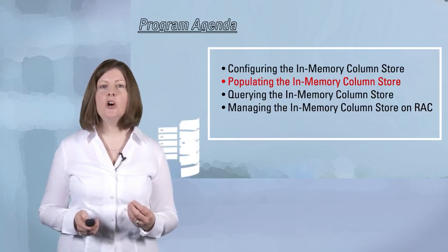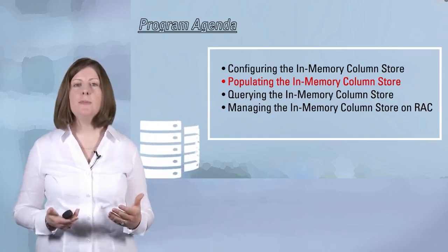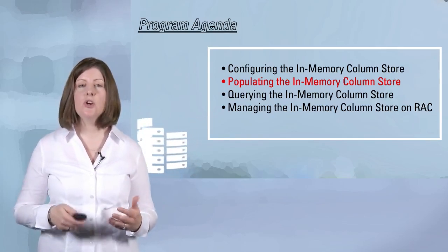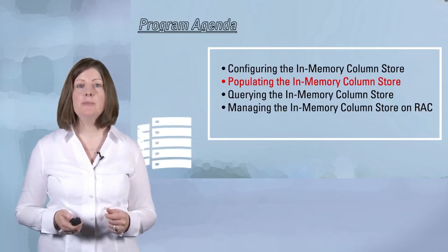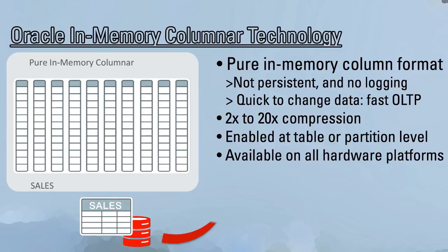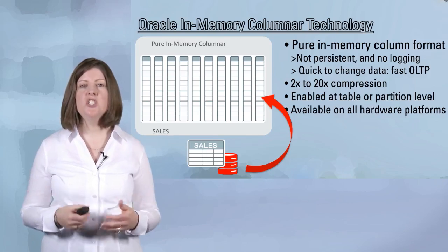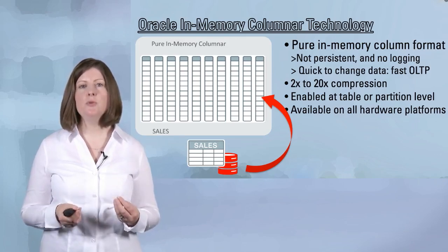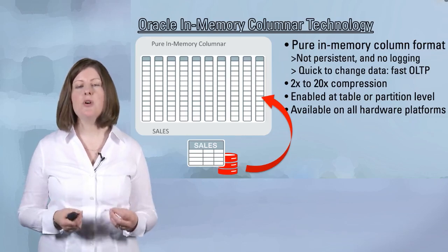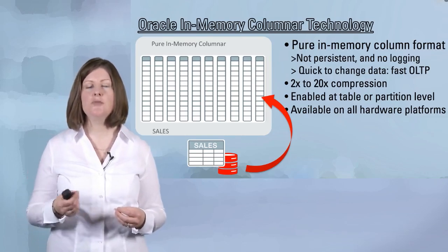Now I want to move on and talk about how we decide what objects should go into that column store and how those objects will be populated in memory. You get to decide which objects you want to populate into the column store, and those objects are going to be compressed as they're being populated. I'll explain exactly when the objects will be populated and how much compression is going to be used on each of those objects.